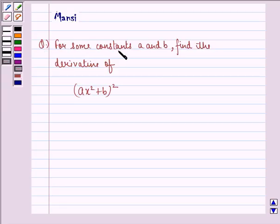The question says for some constants a and b, find the derivative of (ax² + b)². So let us start with the solution.